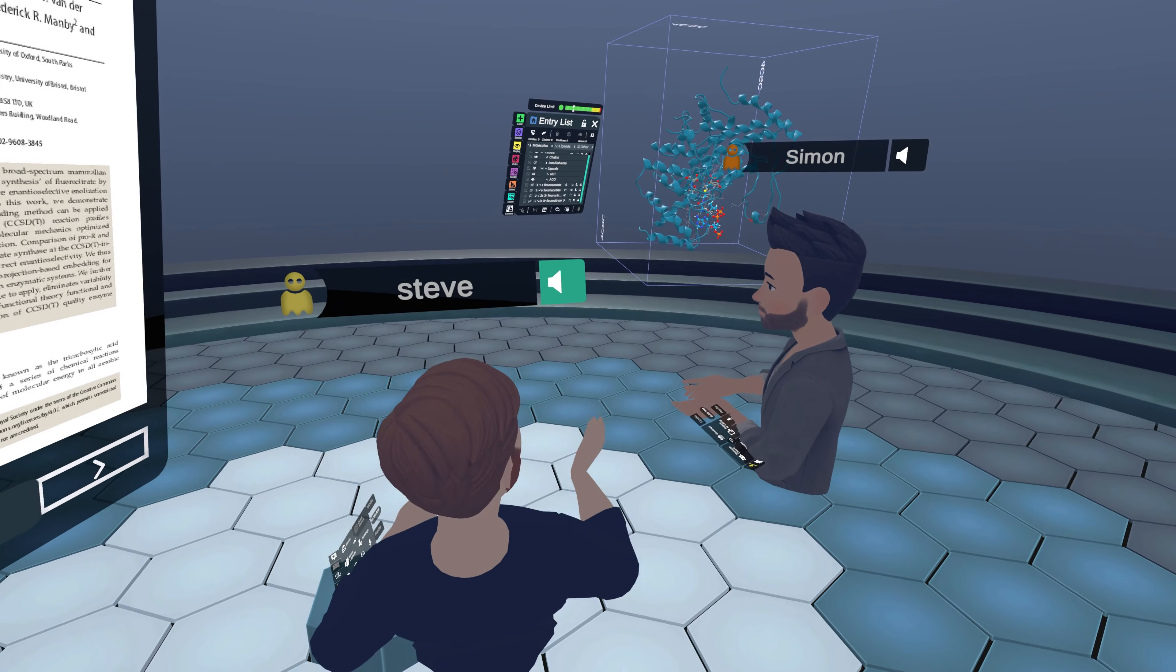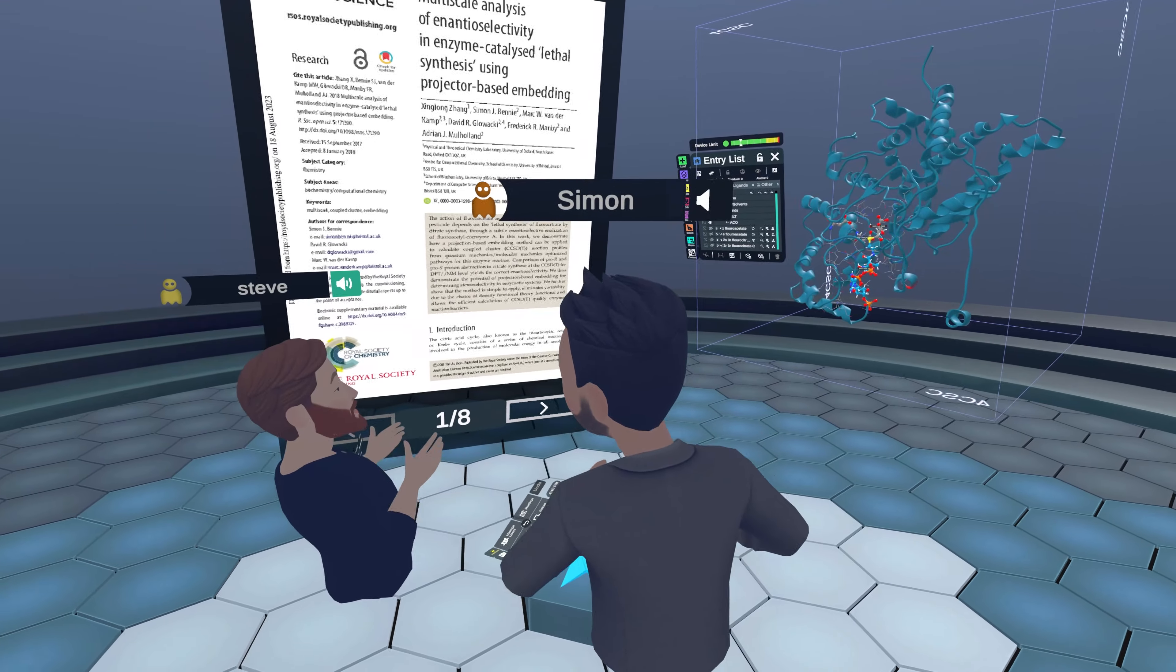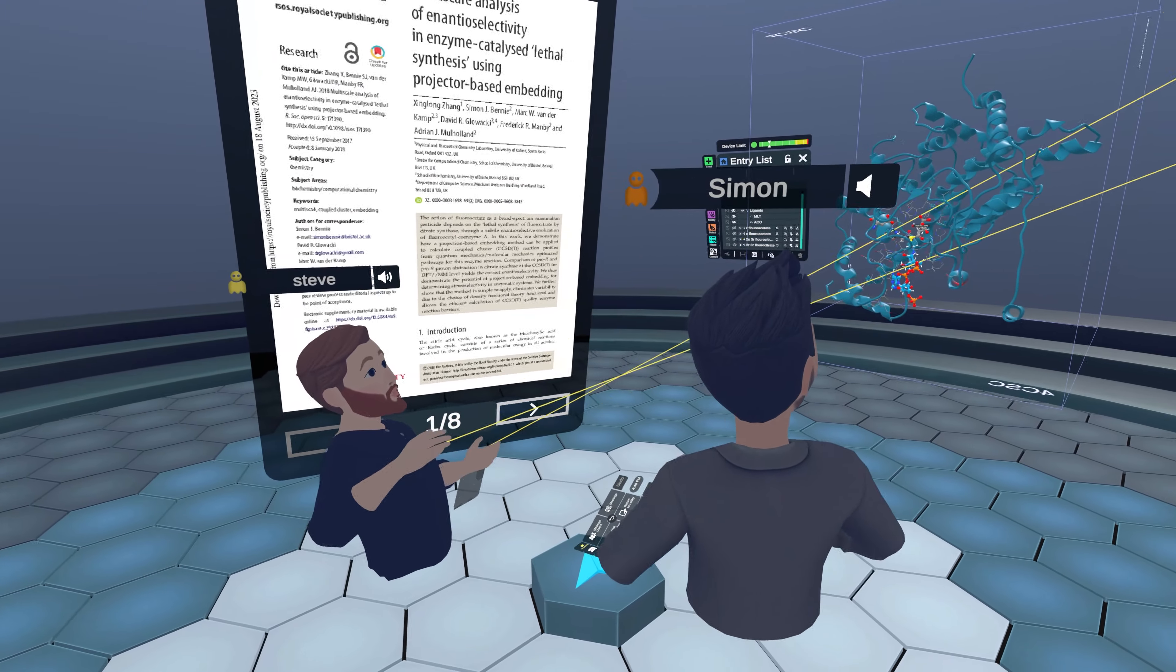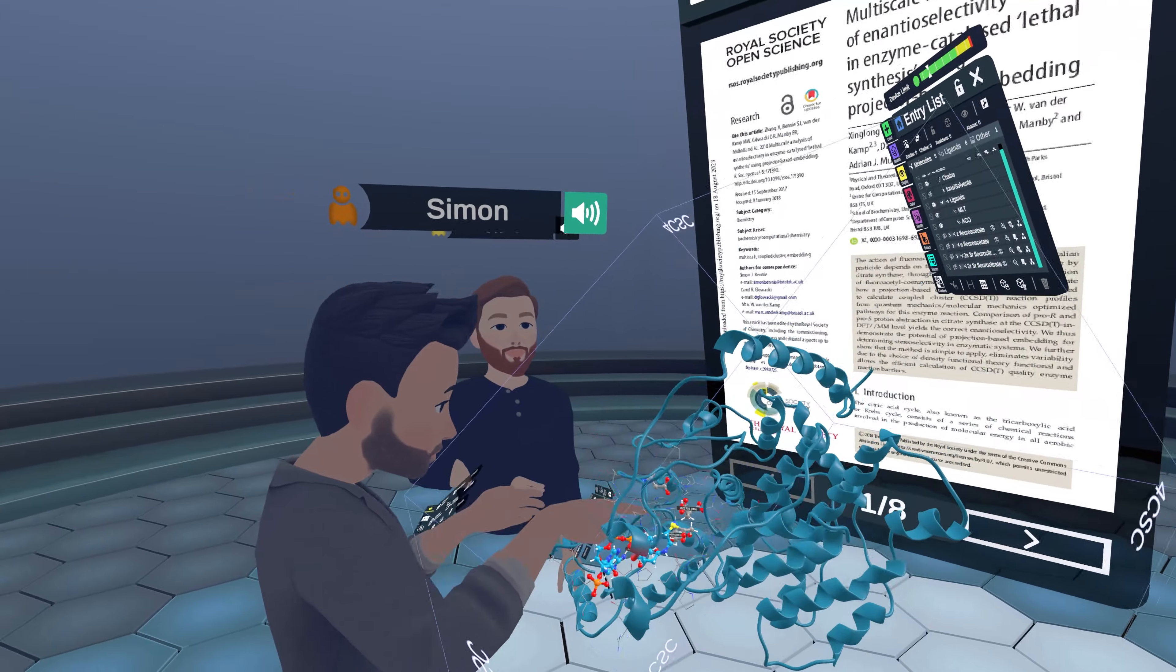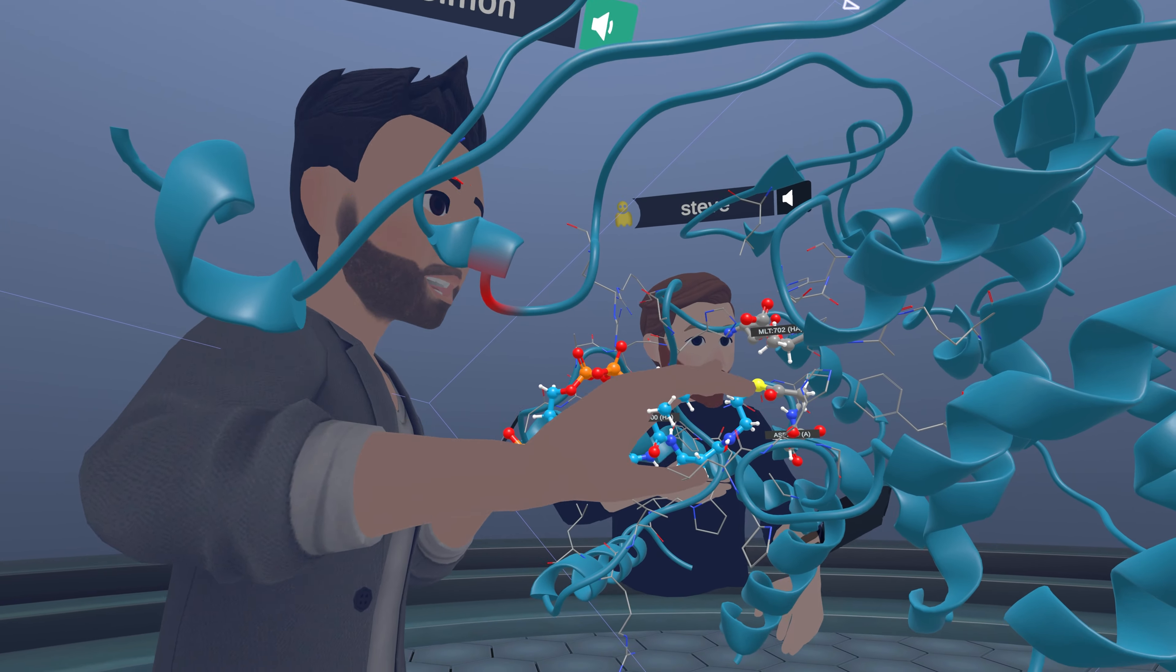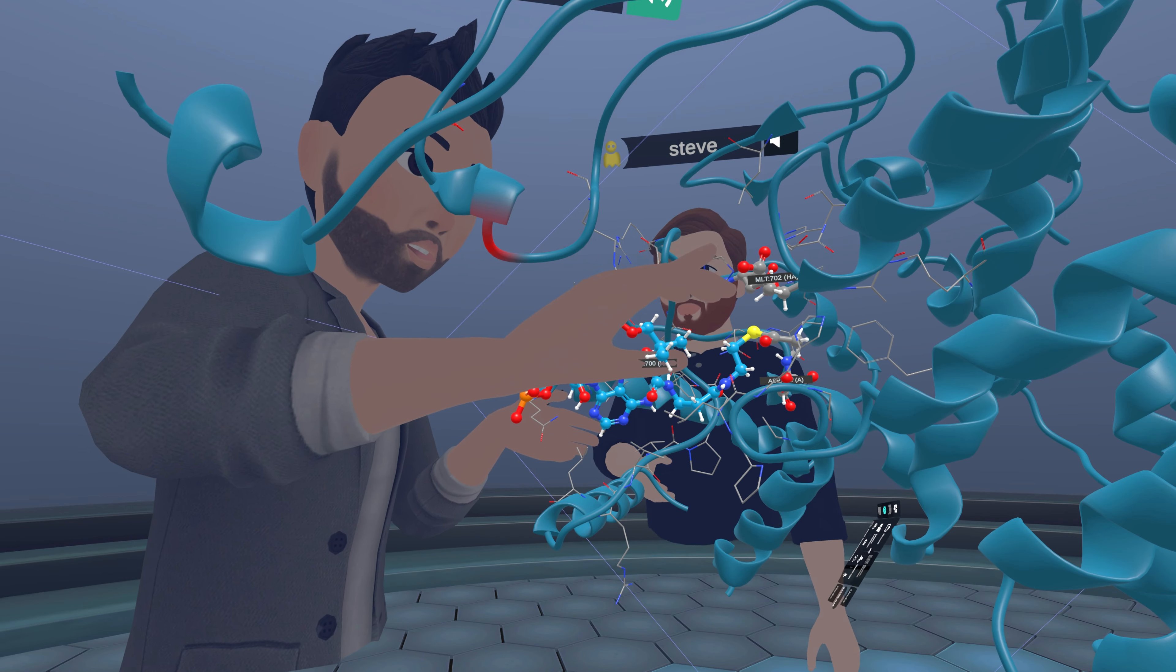We're going to be diving into some enzymes today and exploring them. I'm Steve McCloskey with Nanome, and Simon, let's go ahead and dive into the science here. So this is a citrate synthase. It's an enzyme that is involved in the Krebs cycle, part of the main energy pathway in animals and most living organisms.